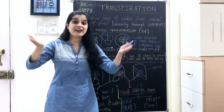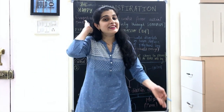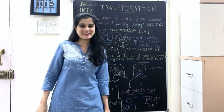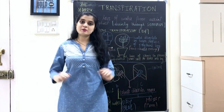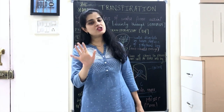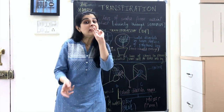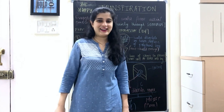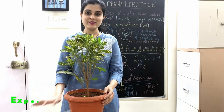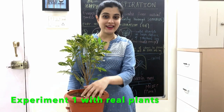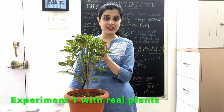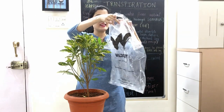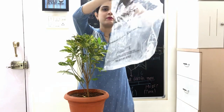So transpiration does take place. Now I want to calculate the amount of water loss by transpiration. There are four experiments in all; two are important and both are board questions. The first simple method: I have taken a well-watered plant and a transparent polythene bag that is absolutely dry.